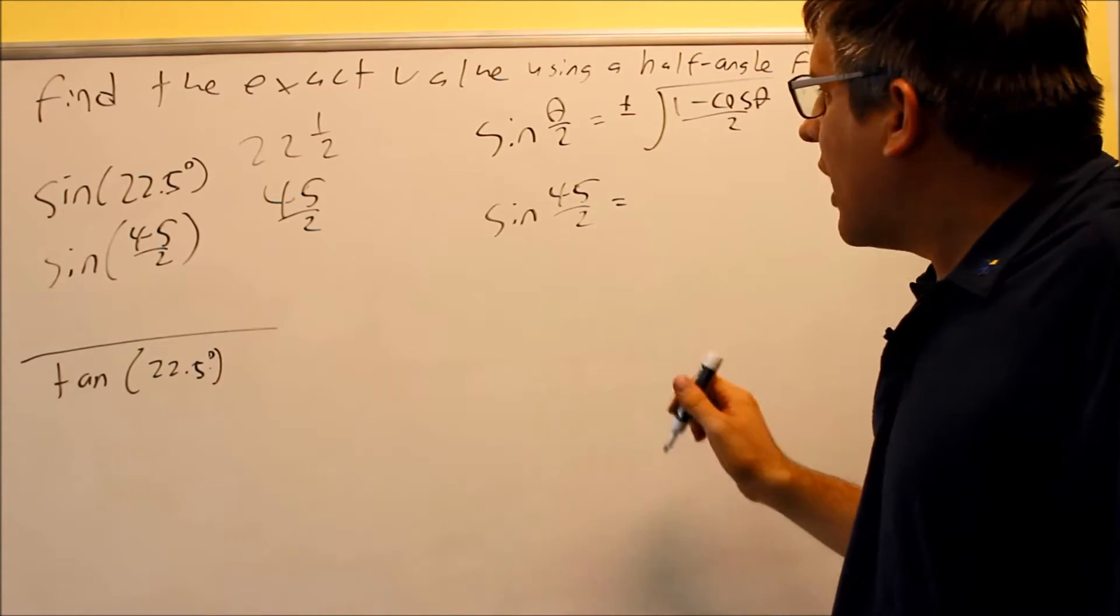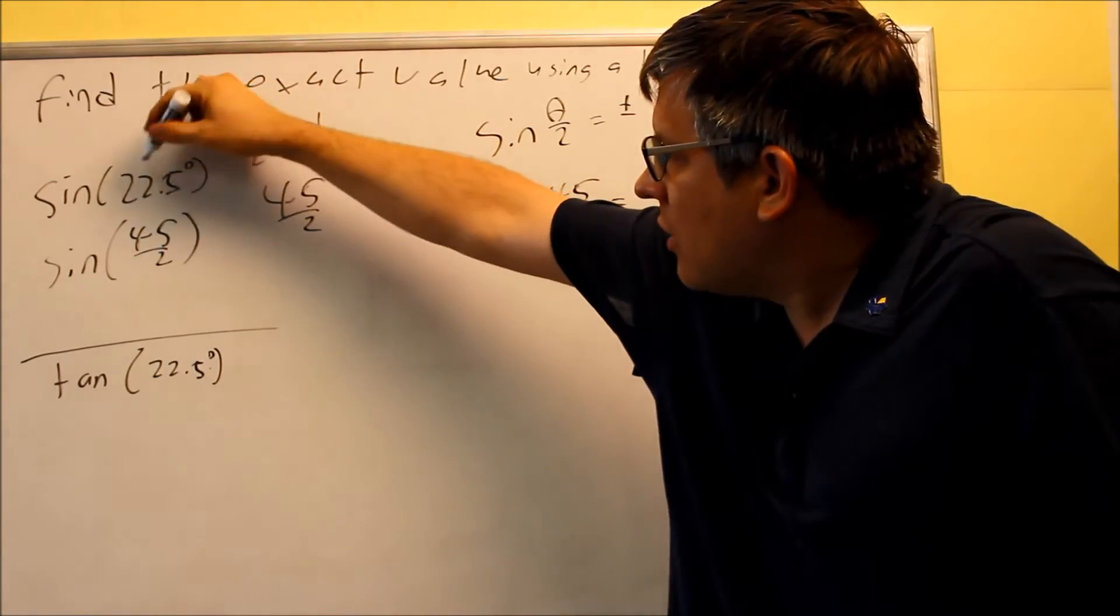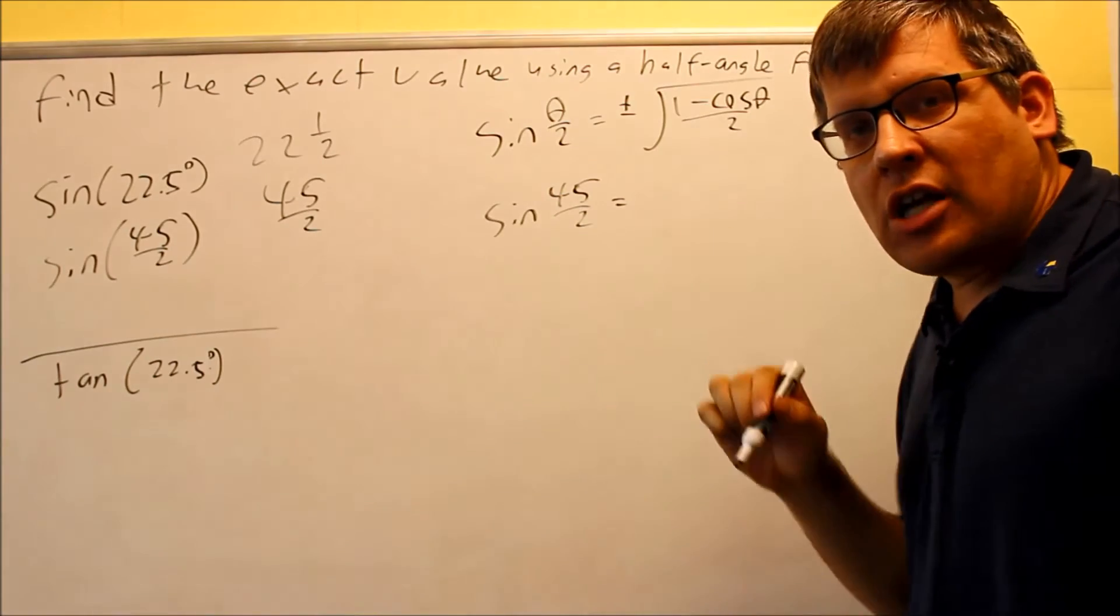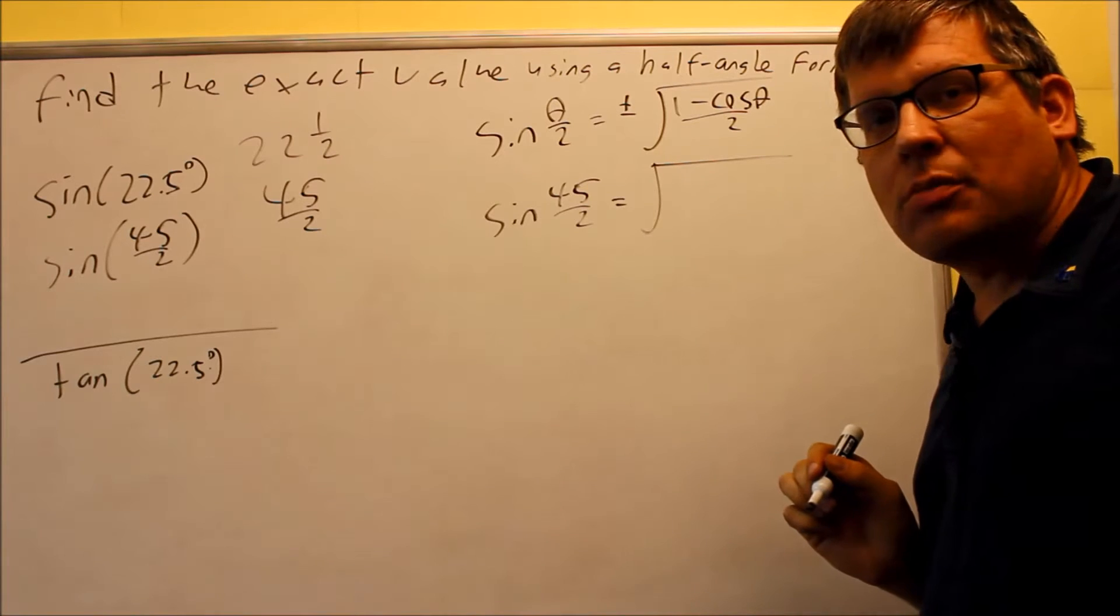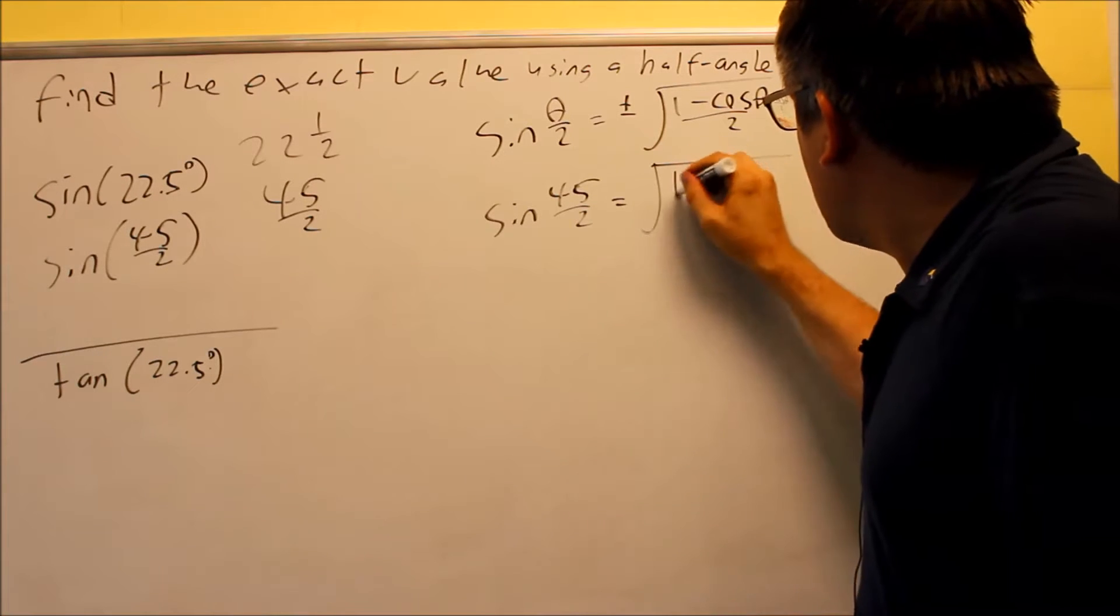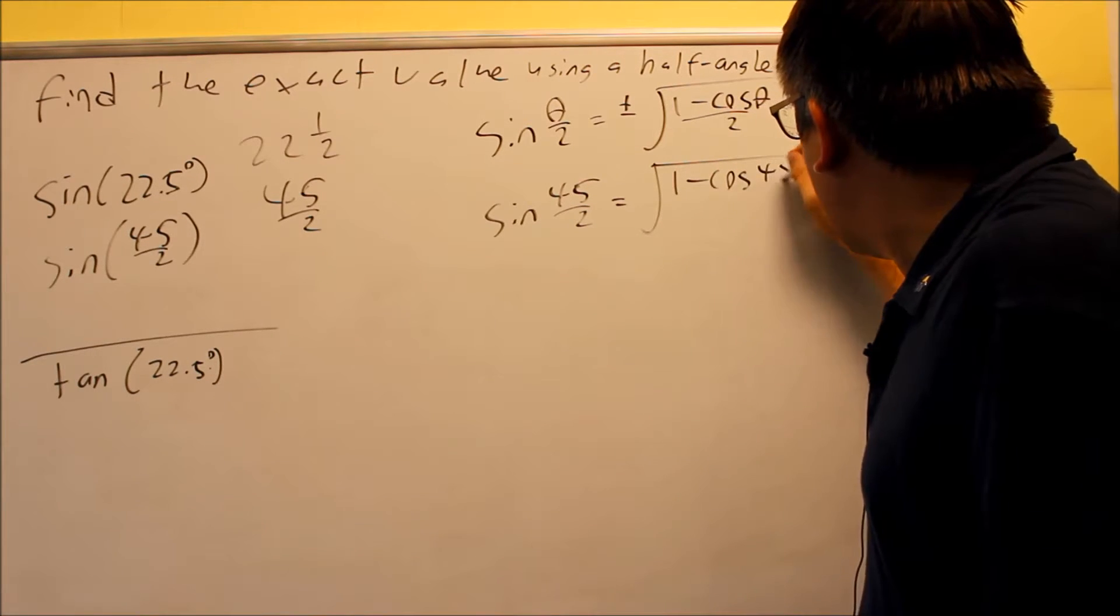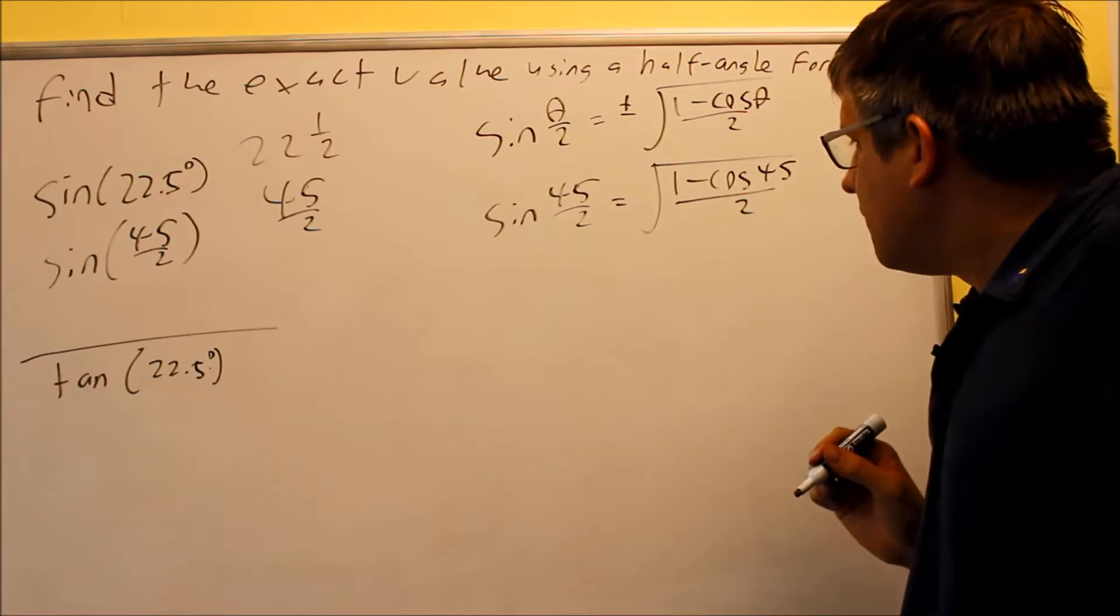Now, for as far as the sine is concerned, I know that 22.5, the original angle, was already in the first quadrant. So I don't need the plus or minus. I already know that it's going to be the positive version here. So I'm going to do 1 minus cosine 45 divided by 2.